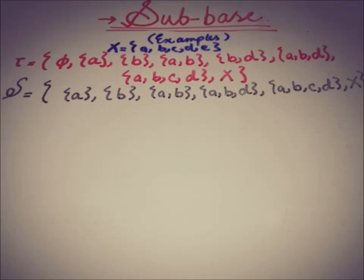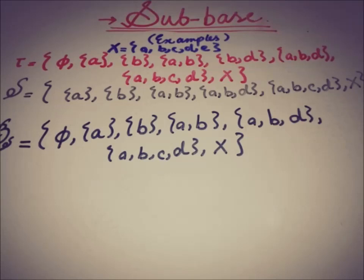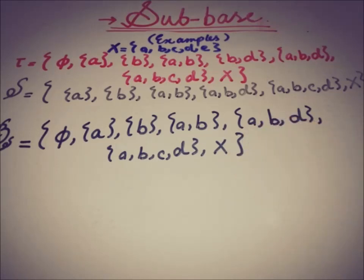Taking the intersection of A with itself gives A. A with B gives the empty set. A with AB gives A. Proceeding in the same way, we get elements including A, B, AB, ABCD, and X in the resulting set B_s.